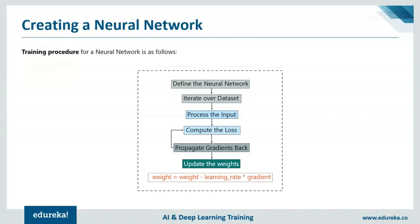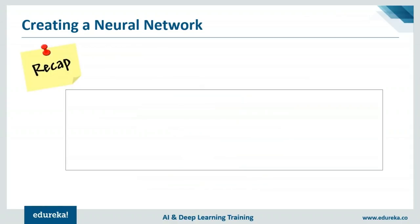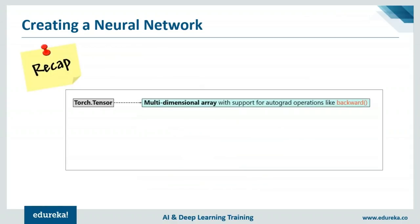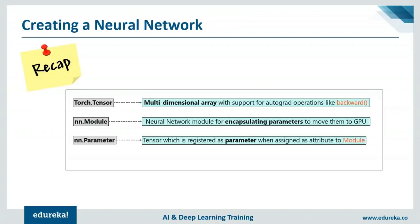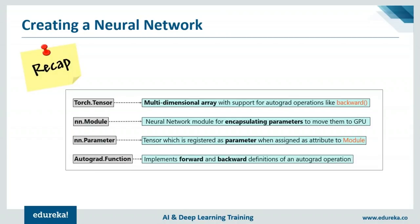Let's recap the basic terms: torch.Tensor is the multi-dimensional array with support for autograd operations like backward(). nn.Module is the neural network module used for encapsulating parameters to move them between GPU and CPU. nn.Parameter is a tensor registered as a parameter when assigned as an attribute to a module. autograd.Function implements the forward and backward definitions of an autograd operation.